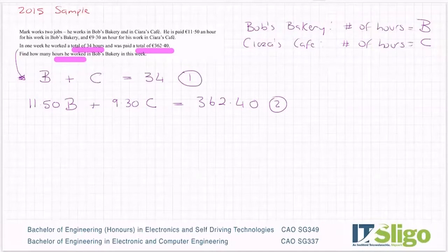And we solve them. So just like any simultaneous equations, I have to cancel B or C. So I either have to bring this up to 9.30 to cancel this one, or I have to bring this one up to 11.50. And again, it doesn't matter. Let's cancel the Bs in this case. So let's multiply this one by 11.50.